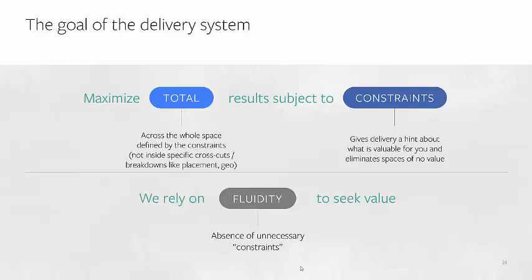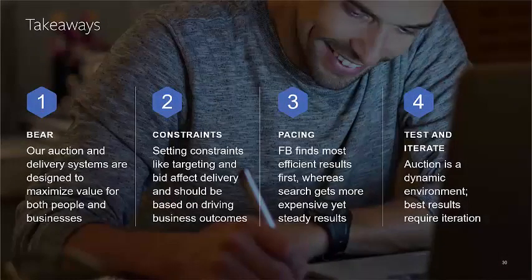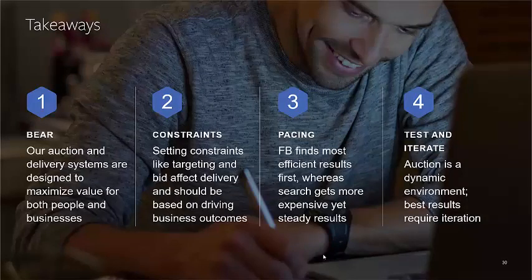Let me give you a few takeaways before taking some questions. Our auction and delivery system is designed to maximize value for both people and businesses — remember the BEAR framework. Setting constraints like targeting and bid affect your delivery, so set these constraints only when necessary to drive business outcomes. Also remember pacing — arguably our most important differentiator from ad delivery on search platforms is our pacing system. It finds the most efficient results first, whereas search gets more expensive yet steady cost per result.